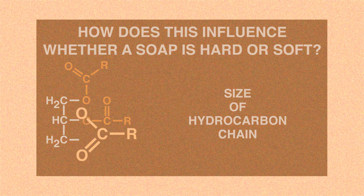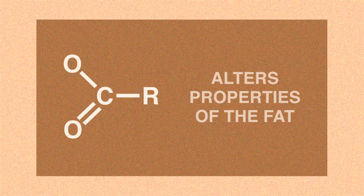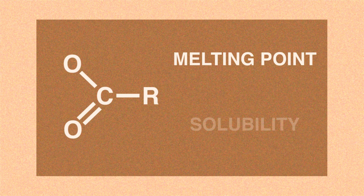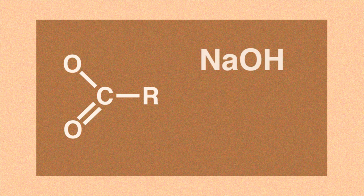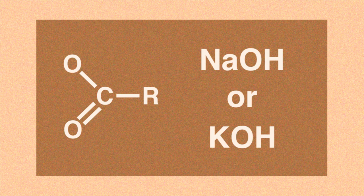The R groups of a particular length alter the fat's properties, particularly its melting point and its solubility. In addition, the choice of base — such as whether you use sodium hydroxide or potassium hydroxide — is also important.